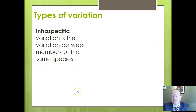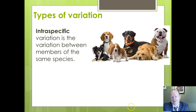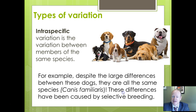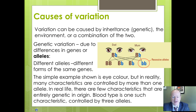Intra-specific variation is between members of the same species — within the same species — whereas inter-specific is differences between different species. A classic example is dogs. These are all variation within Canis familiaris. Obviously the variation doesn't need to be this extreme. We've caused this through selective breeding; the original common ancestor would have been much more wolf-like, and we've exaggerated different characteristics as we've bred different dogs.